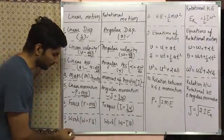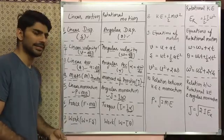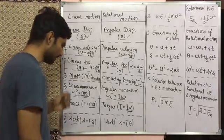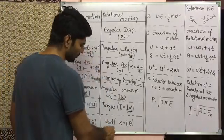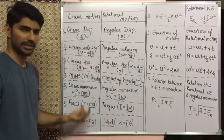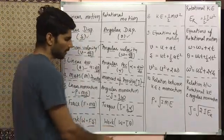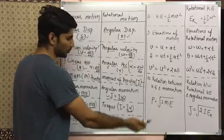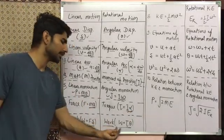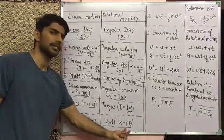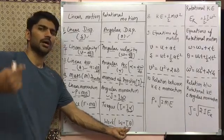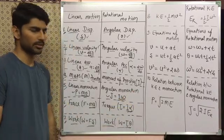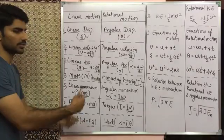The next point is work. In linear motion, work is given by force multiplied by displacement. In rotational motion the name 'work' remains the same, but the formula changes: force is converted into torque and displacement is converted into theta (angular displacement). So work done in rotational motion = torque × θ, where torque is the moment of force and theta is the angular displacement.